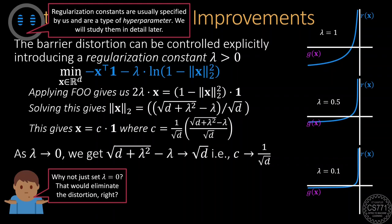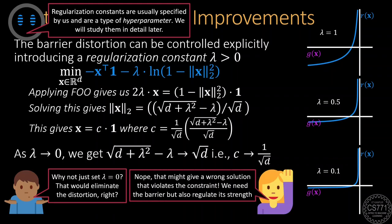However, note that we cannot just set lambda to zero since that will completely eliminate the barrier altogether and our solution may then violate the constraint. Instead, we must set lambda to a small positive value to keep the barrier but limit its distortion.